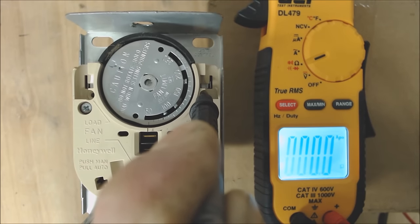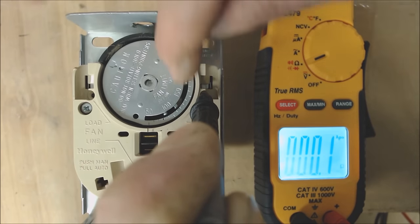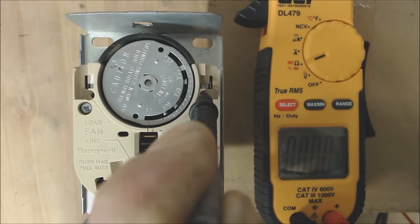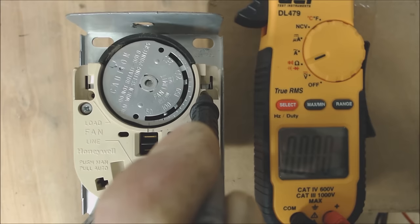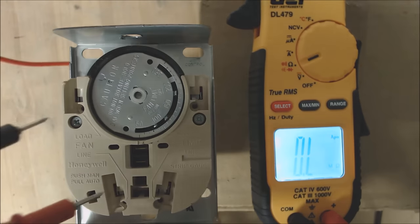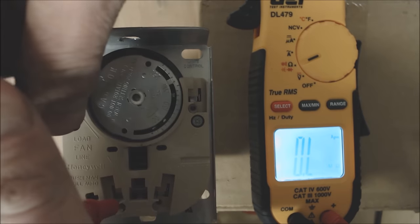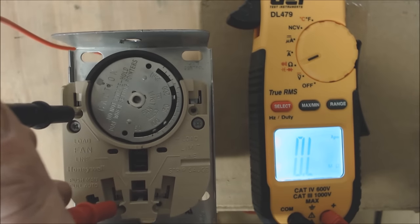Anytime that the fan limit is below 180 degrees, it's actually connected and the ignition assembly can fire. Now over on this side, you have your power coming in. Right here, you should have an OL, which you do have.